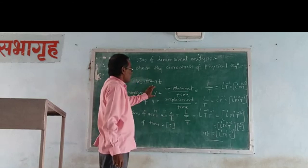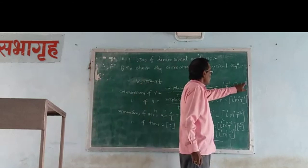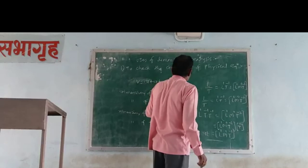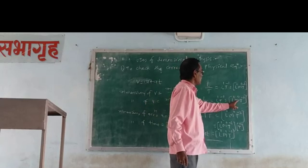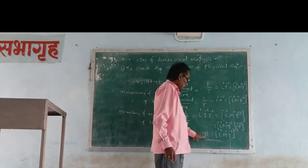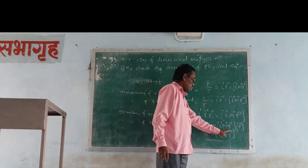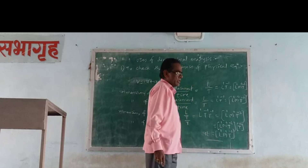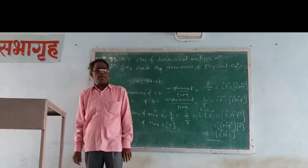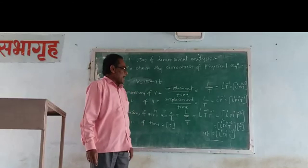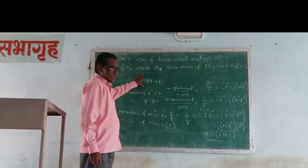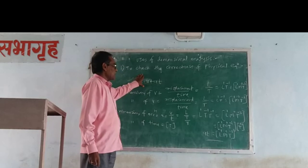Dimensions of V: L1 M0 T minus 1. Dimensions of U: L1 M0 T minus 1. Dimensions of AT: L1 M0 T minus 1. Each and every term on both sides has the same dimensions, so this equation is dimensionally correct.